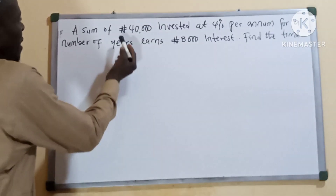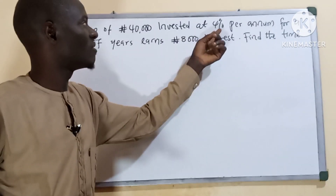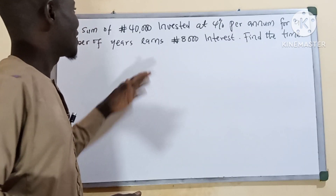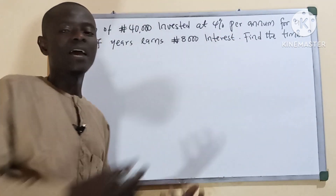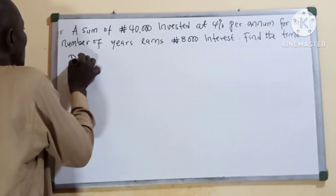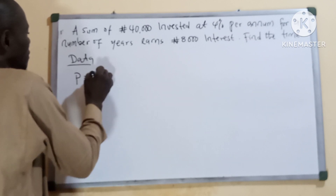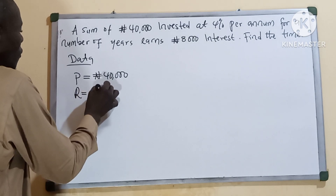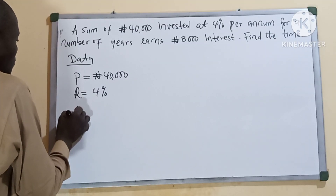I am going to explain this. We have our principal P which is 40,000 Naira. I hope we are following. Then we have our rate R, which is 4%.